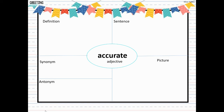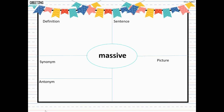Our next word for this week is accurate — A-C-C-U-R-A-T-E. Accurate is an adjective, describing a noun, and it means free from mistakes. A paper received a hundred percent because it was accurate, meaning there were no mistakes on the paper. When you give an answer that is accurate, it means it is free from mistakes, or correct. So the word accurate is an adjective that means free from mistakes.